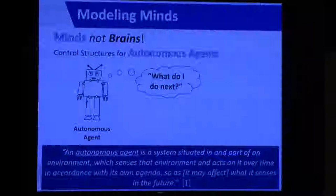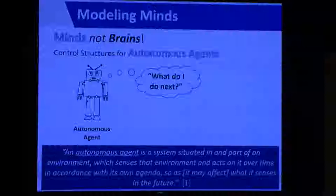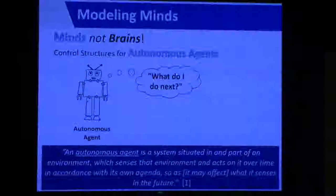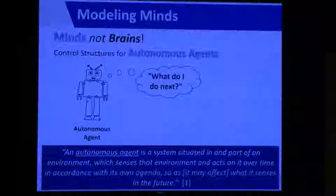We're particularly interested in a class of agents called autonomous agents. We have a very precise definition from a paper that Dr. Franklin published back in the 1990s. An autonomous agent is a system situated in and part of an environment which senses that environment, acts on it over time in accordance with its own agenda, so as it may affect what it senses in the future.